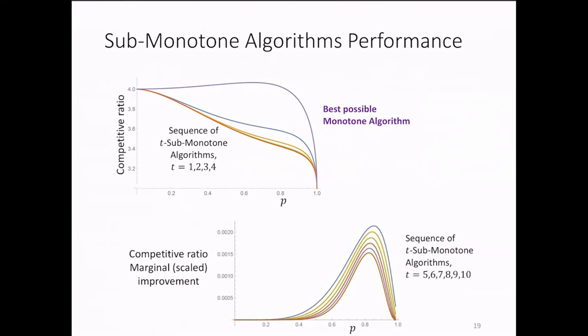And that brings us back to the graph that depicts the competitive ratio of various algorithms. And please look at the top of the slides. What you see is the competitive ratio of T sub-monotone algorithms, where T is 0, 1, 2, 3, and 4, inducing better and better performance.